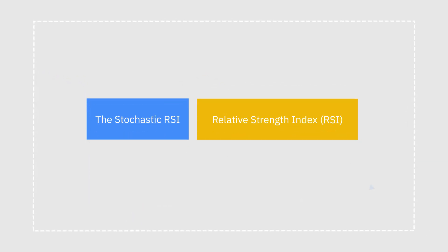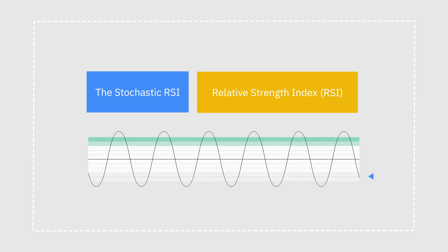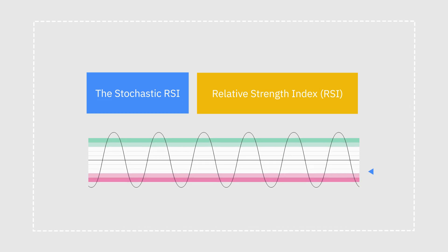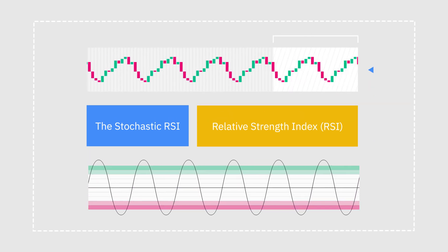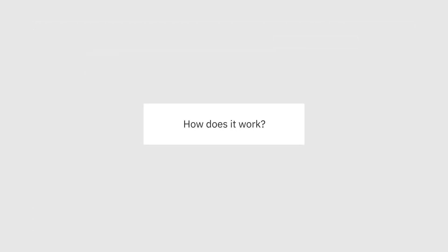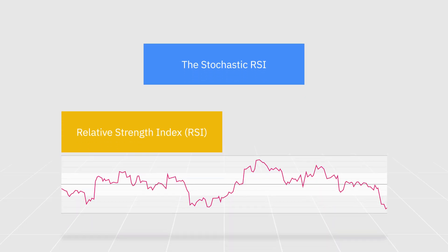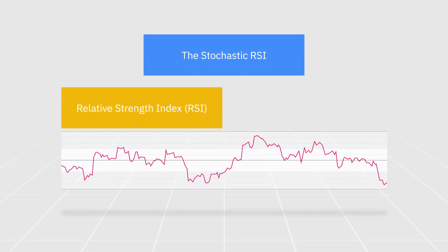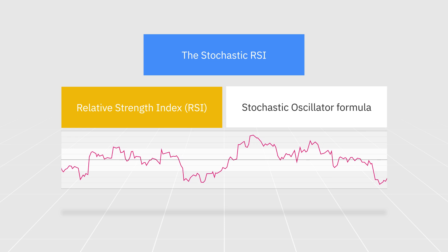Both of these indicators are oscillators used to identify overbought and oversold conditions by measuring changes in the price of an asset over a given time period. But how does it work? As the name suggests, the Stochastic RSI is generated from the ordinary RSI indicator by applying the so-called Stochastic Oscillator formula.